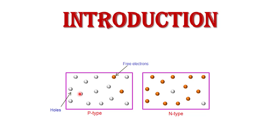In p-type semiconductor, a large number of holes are the majority carriers and free electrons are the minority carriers. Similarly, n-type semiconductor material is formed by adding a small amount of pentavalent impurity to pure silicon or germanium. The pentavalent impurity has five valence electrons in its outermost shell, so a large number of free electrons are generated. In n-type semiconductor, free electrons are the majority carriers and holes are the minority carriers.